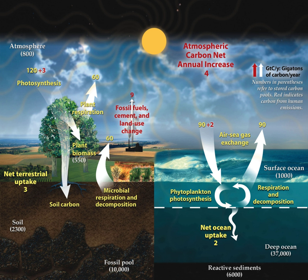Carbon dioxide is removed from the atmosphere primarily through photosynthesis and enters the terrestrial and oceanic biospheres. Carbon dioxide also dissolves directly from the atmosphere into bodies of water, lakes, etc., as well as dissolving in precipitation as raindrops fall through the atmosphere. When dissolved in water, carbon dioxide reacts with water molecules and forms carbonic acid, which contributes to ocean acidity. It can then be absorbed by rocks through weathering.